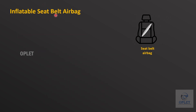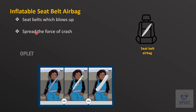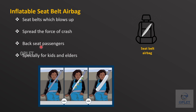Inflatable seat belts are seat belts that blow up or inflate within 40 milliseconds when there is a crash. These seat belts spread the force of a crash over 5 times more area of the body than conventional seat belts. They were designed to protect passengers sitting in the back seat, especially children and the elderly.